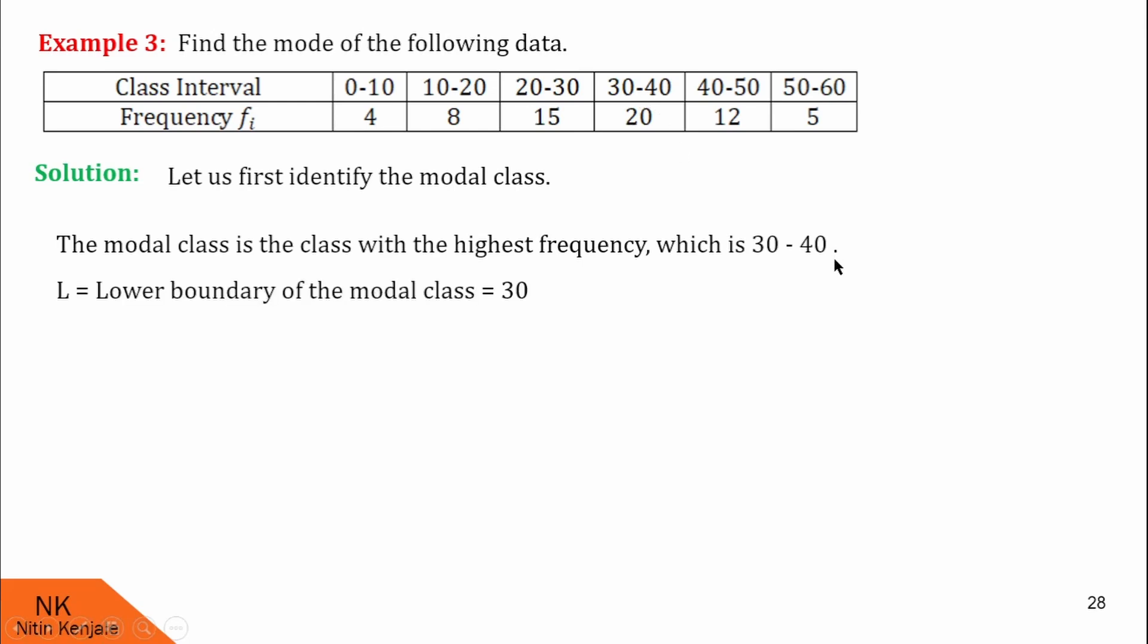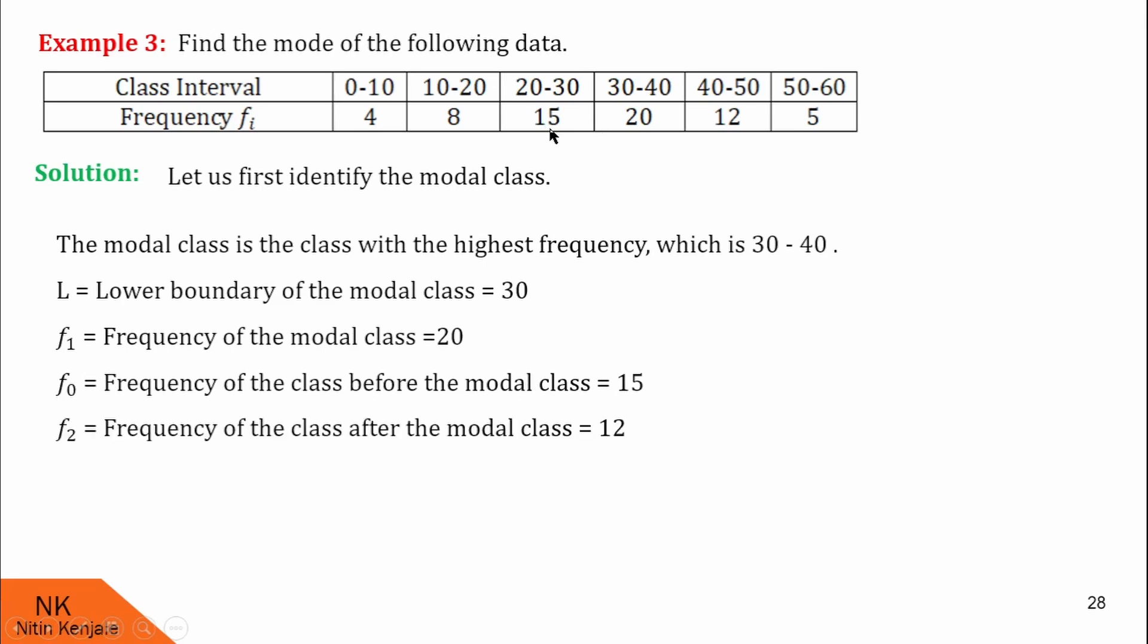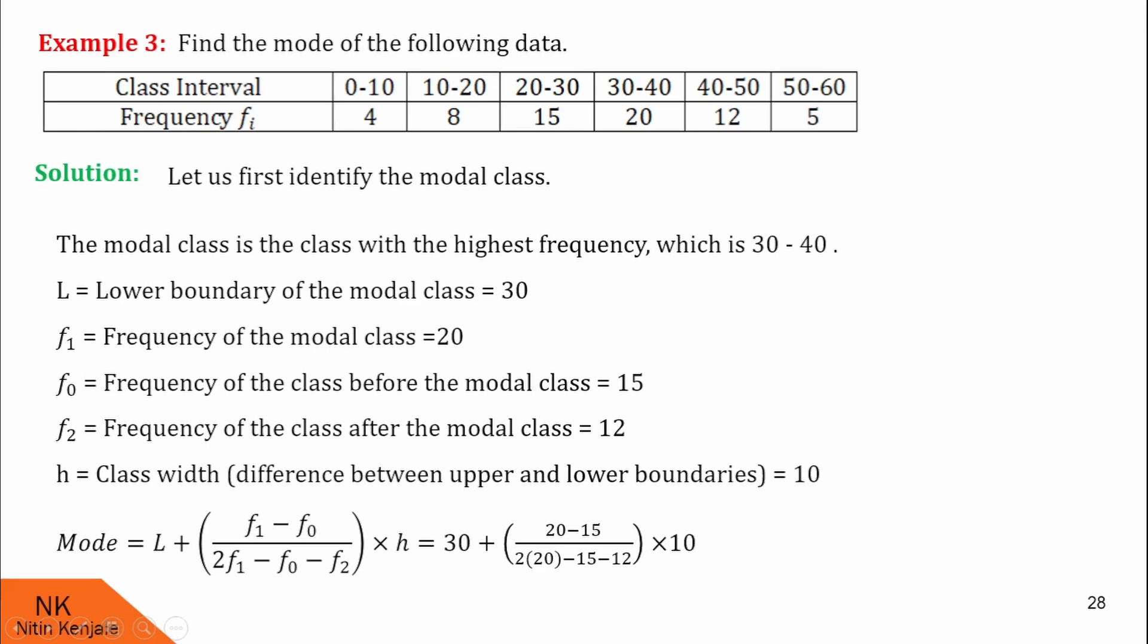Therefore, L which stands for lower boundary of the modal class is 30. F1 is the frequency of the modal class which is 20. F0 is the frequency of the class before modal class which is 15, and F2 is the frequency of the class after modal class which is 12. Here H is 10. You can see that the class interval has width 10 everywhere. Now we will substitute values of these variables into the mode formula which is L plus F1 minus F0 upon 2 times F1 minus F0 minus F2 into H. Substituting these values and simplifying we get mode is equal to 33.85.